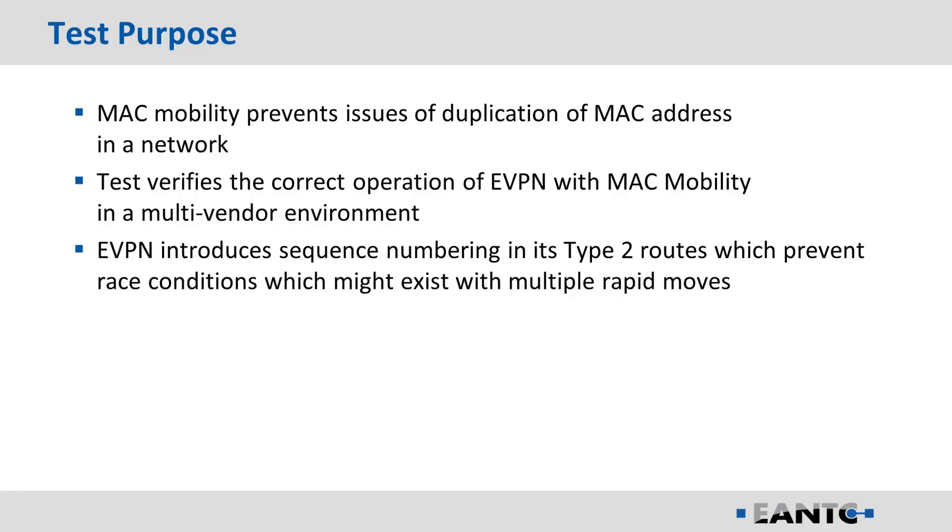The purpose of the MAC Mobility is to provide a means to prevent the MAC flap in the network. As a PE advertises the MAC address as a route type 2, the purpose is to prevent the circulation across multiple PEs, the redistribution and MAC flapping across the whole network.